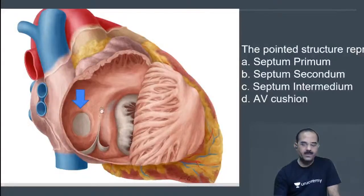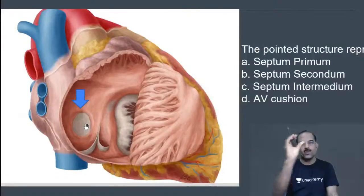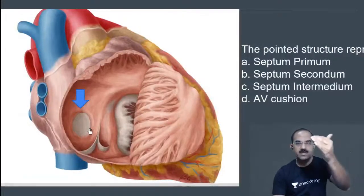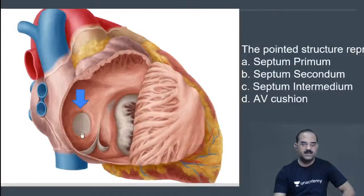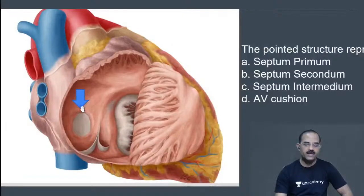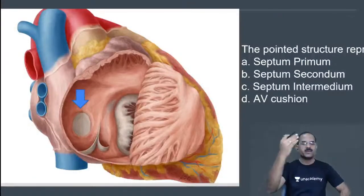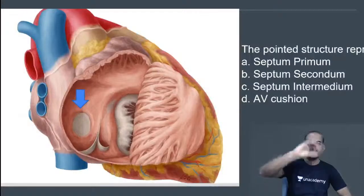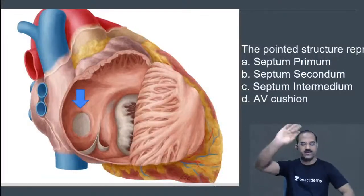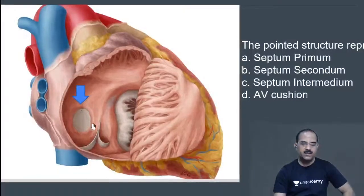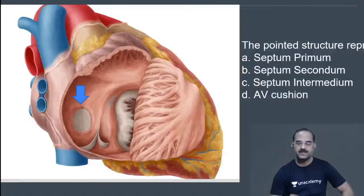This is the interatrial septum. The depression is the fossa ovalis, which is represented by the septum primum. The elevation above it is the limbus fossa ovalis, which is represented by the septum secundum.